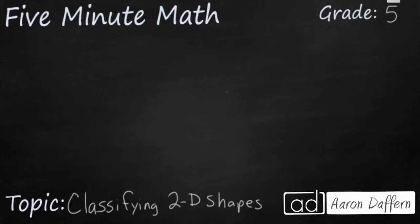Let's see how we can use the attributes of various shapes to put them into groups and even smaller groups. Let's start with our largest group of two-dimensional shapes and that's polygons.